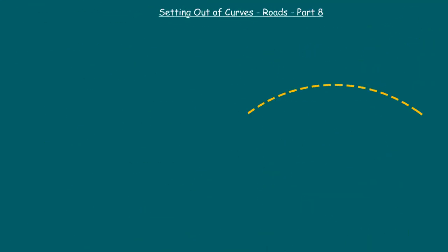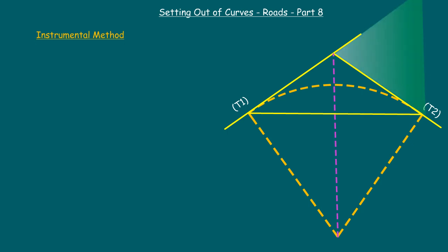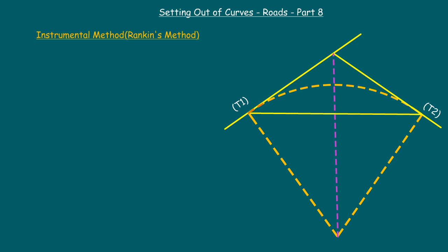Now let us see the setting out of a simple curve. There are many methods in practice; however, the instrumental method known as the theodolite method is the most accurate. Within this, the deflection angle method — also known as Rankine's method — is the most convenient and popular method used in road projects. In this method, we only need the radius and the maximum curve length. Setting out is done by fixing pegs at small regular intervals, where the chord length from one peg to another is approximately equivalent to the arc length of that segment.